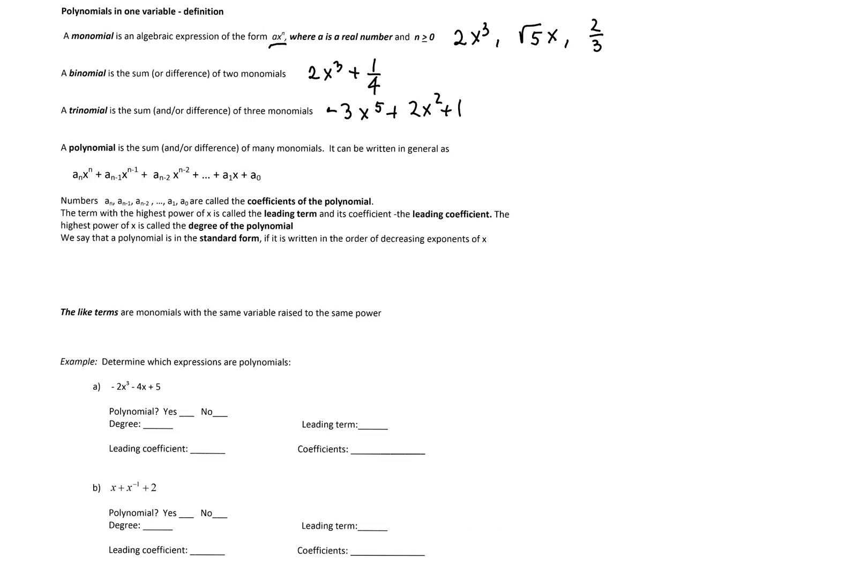Polynomials are usually written in standard form, which means that the monomials are arranged in decreasing order of exponents of the variable.